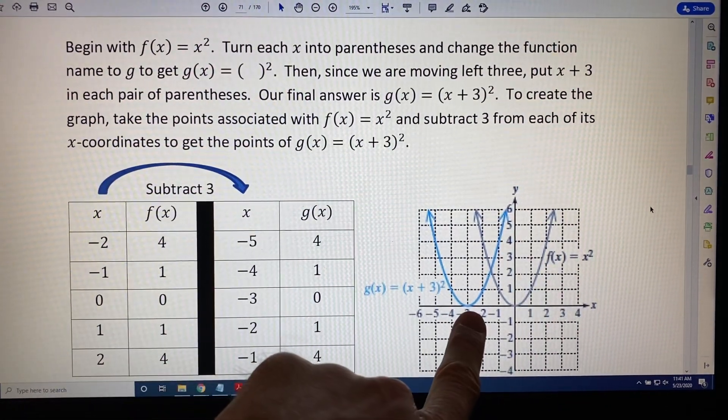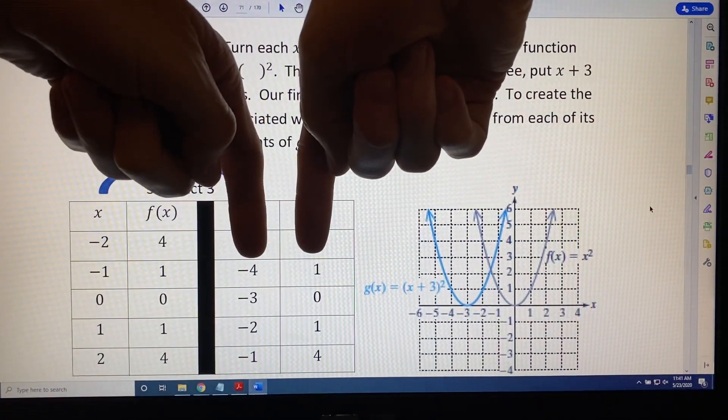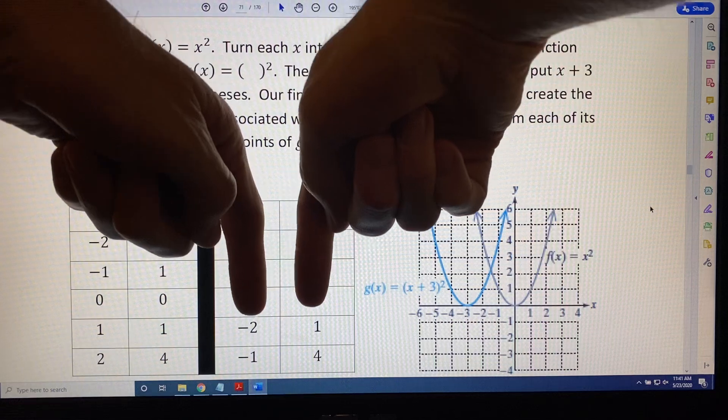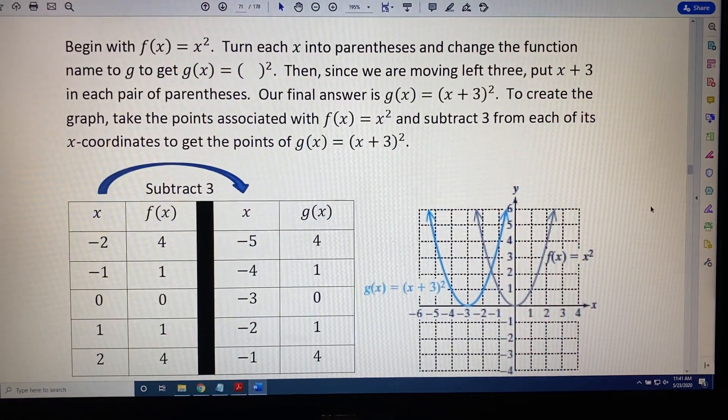Looking at this blue curve, you can also see (-5, 4) is on the graph, (-4, 1) is on the graph, (-2, 1) is on the graph, and (-1, 4) is on the graph.